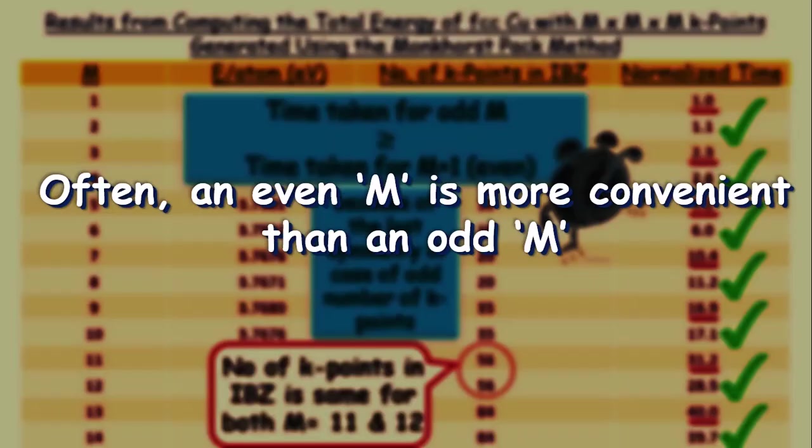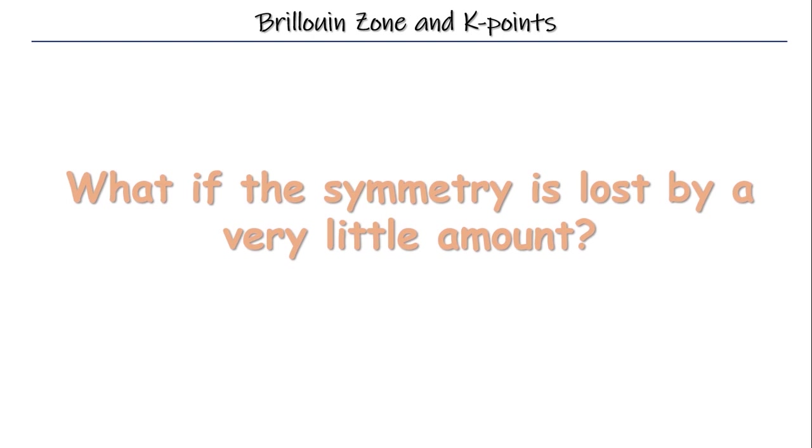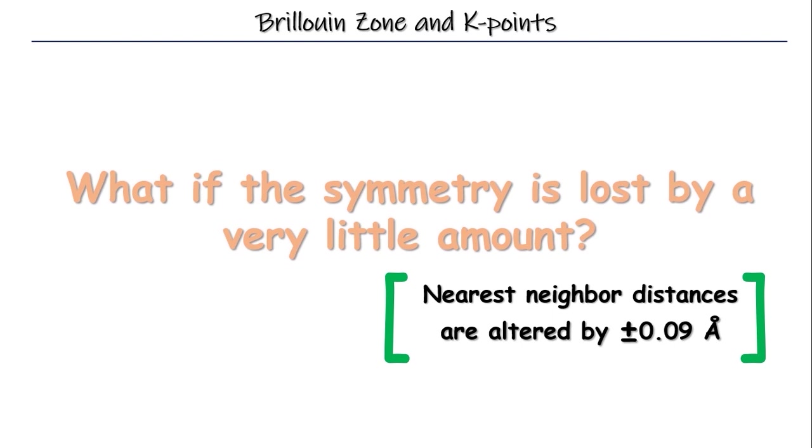I hope, up to this point, you have got everything. Well, let's see what if the symmetry is lost even by a very little amount. Let's do the same calculations like the one we have seen before with the same FCC supercell. But, let's change the nearest neighbor spacing between the atoms by plus minus 0.09 angstrom. And thus, we are actually removing the symmetries.